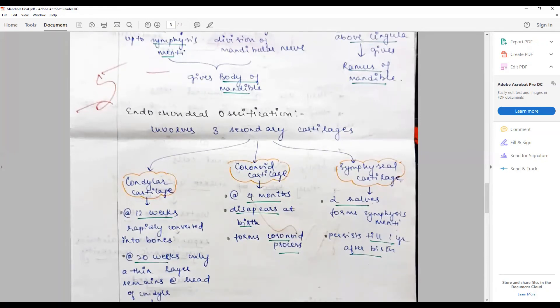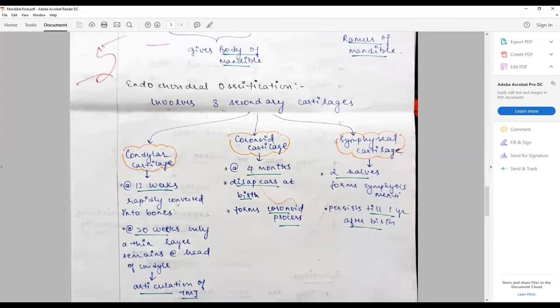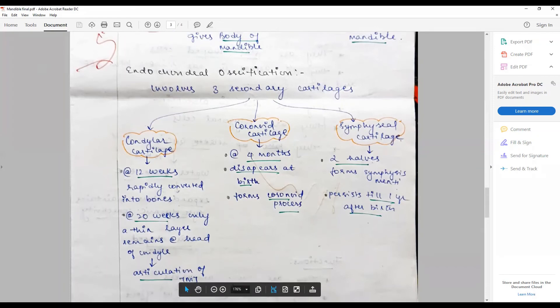The condylar cartilage is manifested a little bit late, starts at about 12 weeks, rapidly converted into bone, and at about 20 weeks, only a thin layer of cartilage remains for articulation of TMJ and persists throughout life.